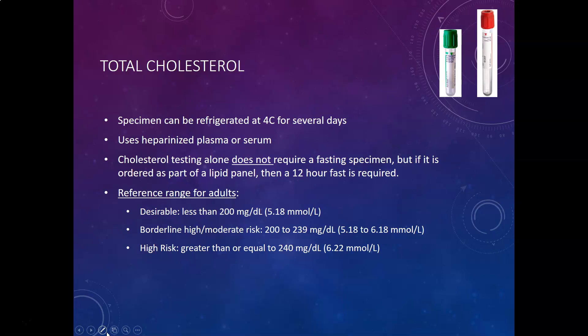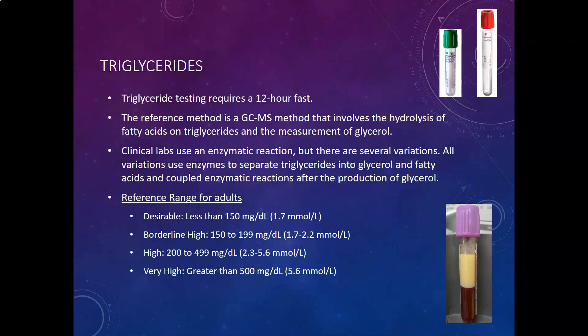The reference range for adults for total cholesterol: desirable is less than 200 mg/dL (5.18 mmol/L). Borderline to moderate risk for cardiovascular disease is 200 to 239 mg/dL, and high risk is greater than or equal to 240 mg/dL.